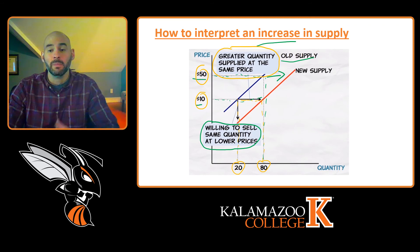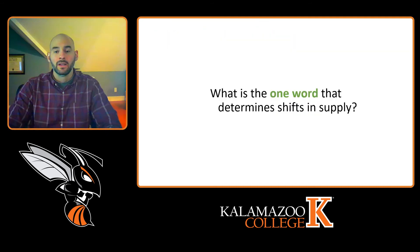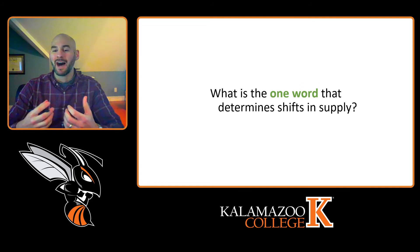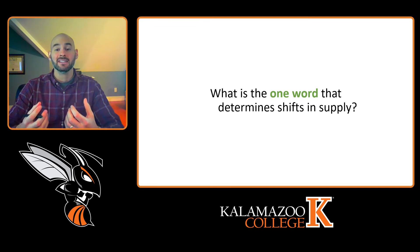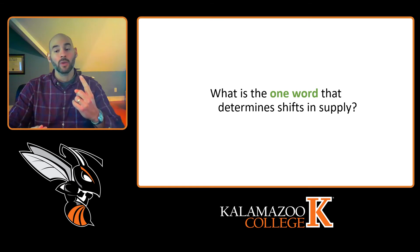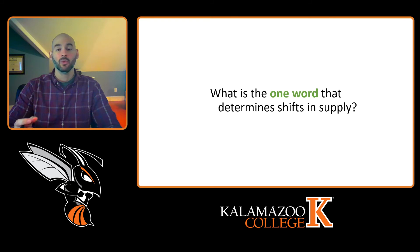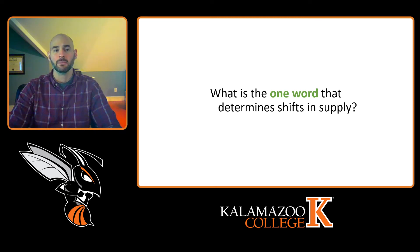Being able to integrate both of these definitions into your thinking is beneficial. Whereas thinking about factors that shift demand may require a mnemonic device to memorize a list, when thinking about what causes a shift in the supply curve, you really just have to think of one word: cost. If there's an increase in the cost of production in any way, the supply curve will shift left — it will decrease. If there's a decrease in the cost of production, the supply curve will shift right.